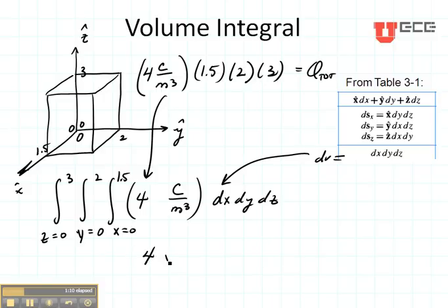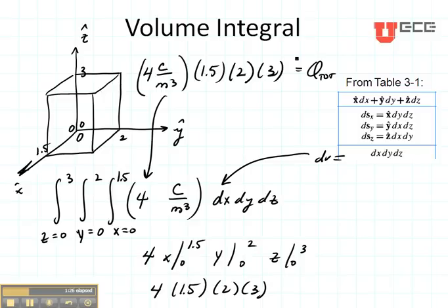It's going to be 4X from 0 to 1.5, Y from 0 to 2, and Z from 0 to 3. That's going to give me 4 times 1.5 times 2 times 3, which is exactly the same thing that I had up there.